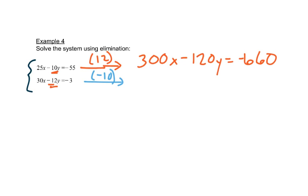The bottom equation I would have 30 times negative 10, which would be negative 300x. Negative 12 times a negative 10 would be a positive 120y. And negative 3 times negative 10 is a positive 30.